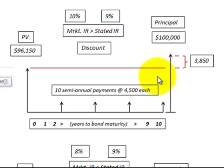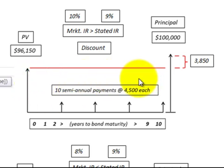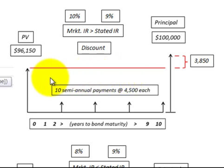We have to discount that principal amount back and those payment amounts back to determine the bond's present value. We do that using the market rate of interest — whatever the market rate is paying for that bond.